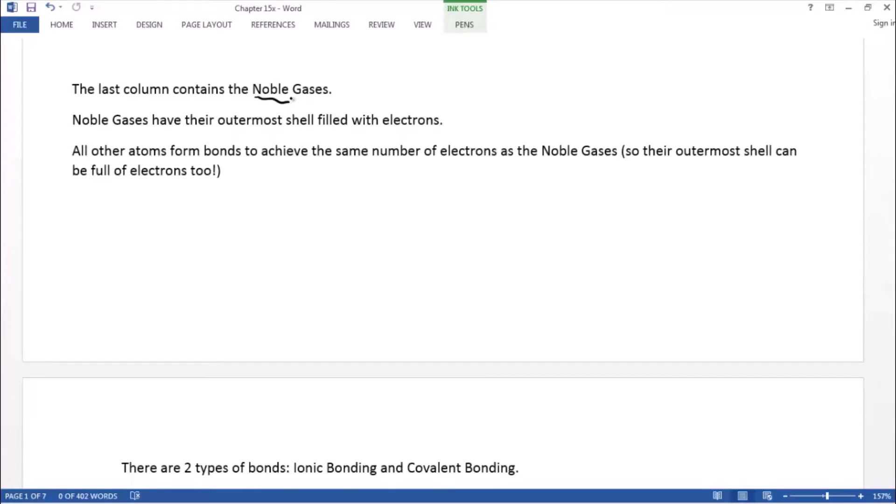However, the rest of the elements on the periodic table, they don't have their outer shell filled with electrons. So what they want to do is to form bonds in order to get the same number of electrons as the noble gases so that in that way, their outermost shell can be full, full of electrons too.